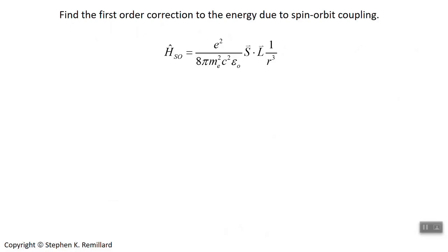Otherwise we're saddled with finding the entire W matrix and solving the eigenvalue problem from that. But we've already established that S dot L has the same quantum numbers as the unperturbed Hamiltonian, as long as you limit yourself to J, M sub J, L, and S. We'll have to find the expectation value of two things: the expectation value of S dot L and the expectation value of 1 over R cubed.